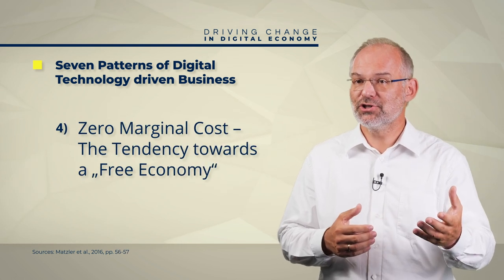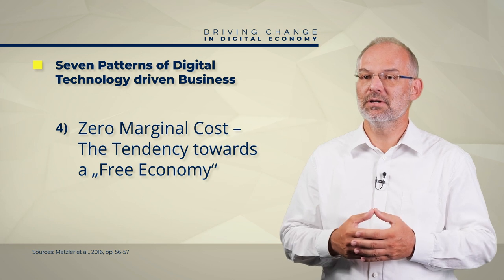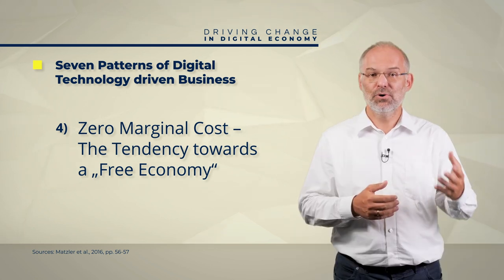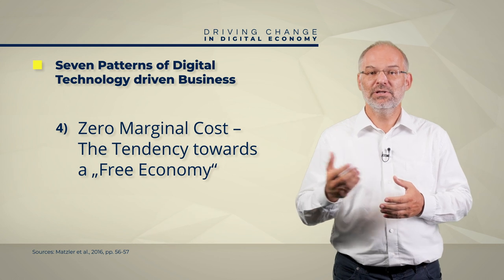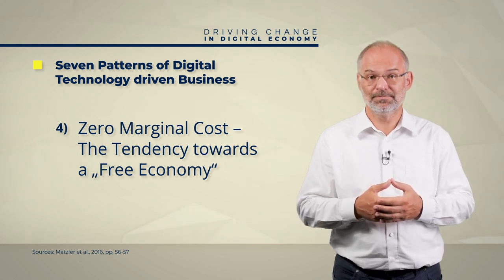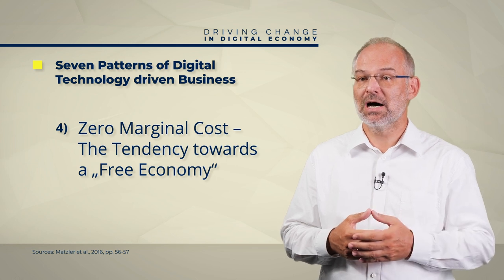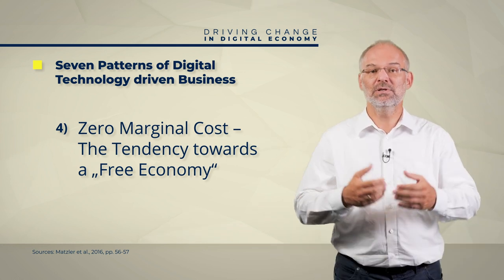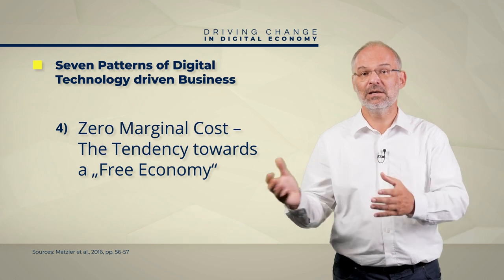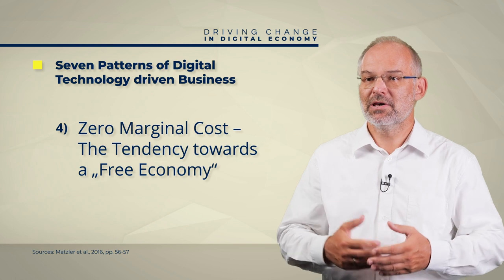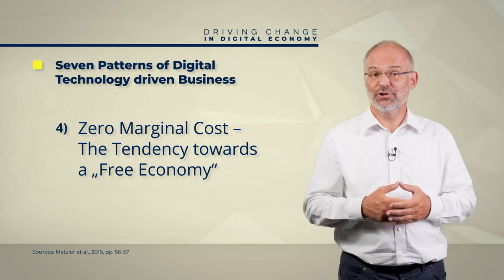Number four, zero marginal cost — the trend towards a free economy. The free economy is typical of digital transformation. Both duplication and distribution of digital products lead to only marginal cost. Digitization opens a new scope in terms of revenue generation. New business models can be designed in which services are supposedly offered for free. Examples include Facebook and Google — use is free of charge, and payment is made with a different currency: data and advertising that users consume. Sharing economy and collaborative consumption also contribute to falling prices, as sharing causes very low marginal cost.